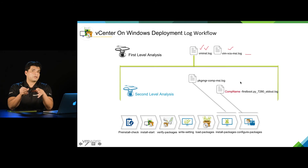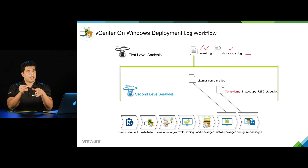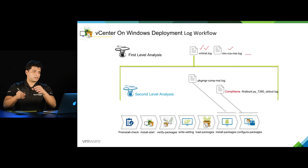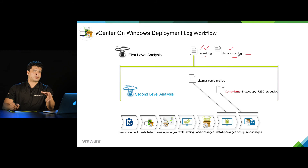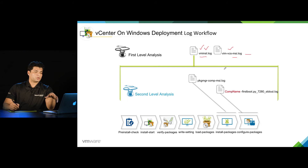The next stage is the configure package stage, where the installer goes ahead and configures the packages or components that were installed in the previous install packages stage. At this stage, a second-level log is created for each and every component being configured. If any component is not being configured, you can see that in vm_install.log and vim_vcsmsi.log — these logs will indicate that a component is not configured or a service is not started. But if you really want to find out why the component or service is not getting started, you need to look into the second-level log.